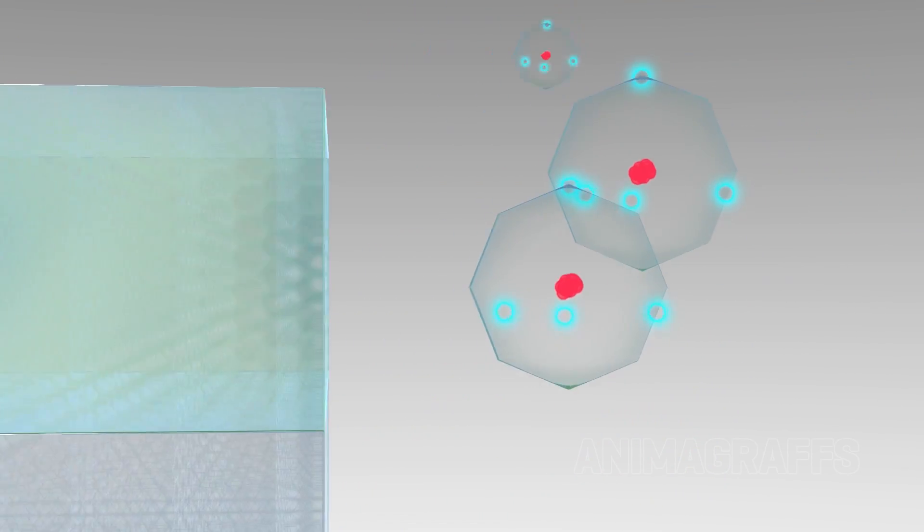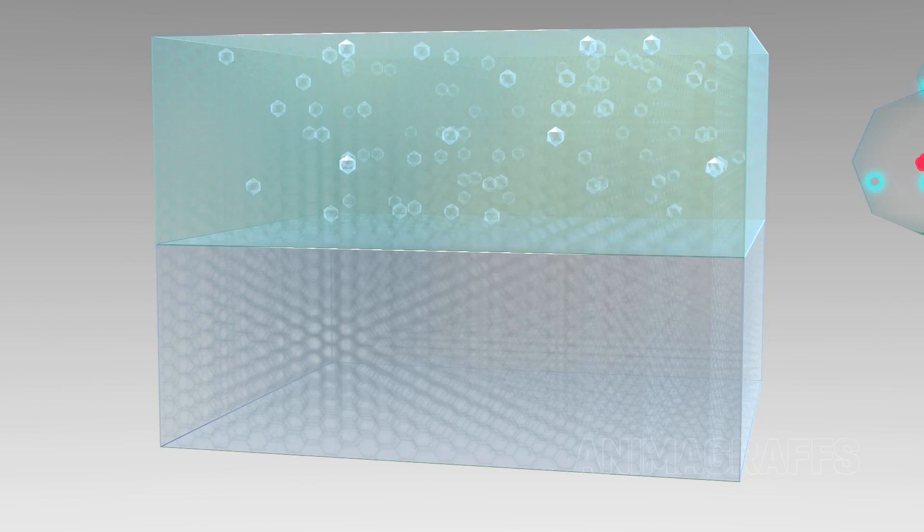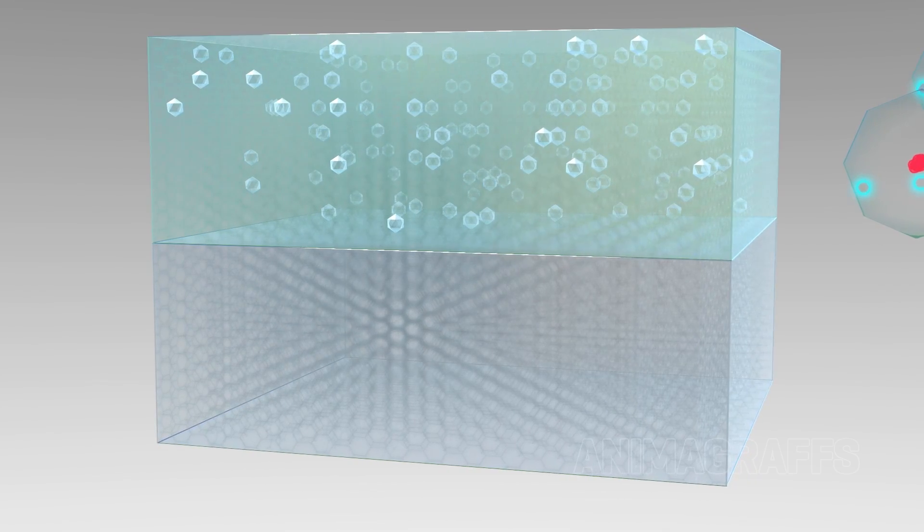We need extra electrons to do work. It's possible to add small amounts of impurities to silicon that change its molecular structure. This is called doping.